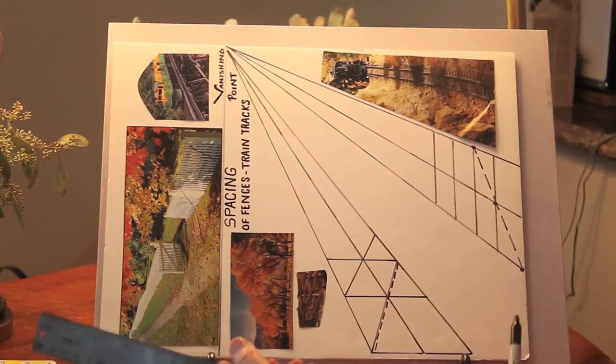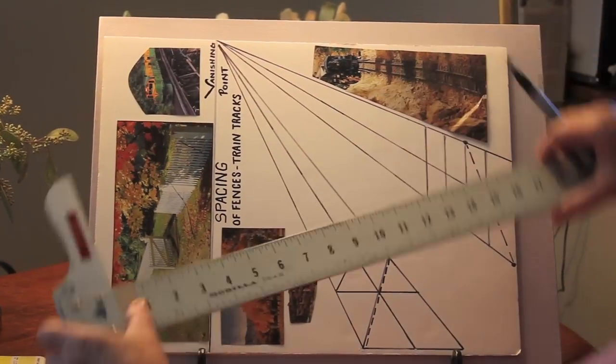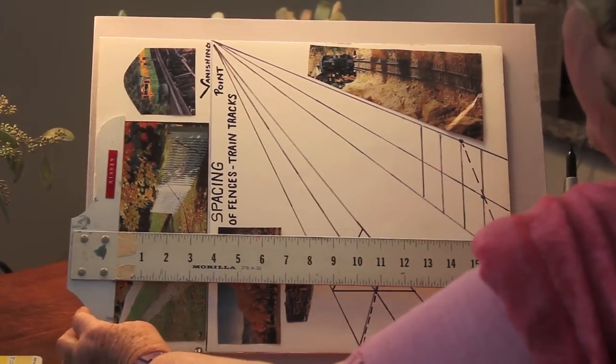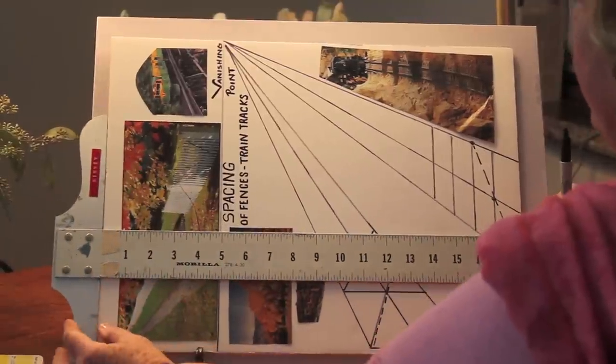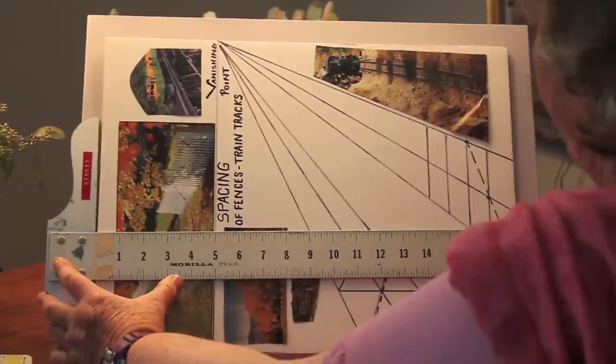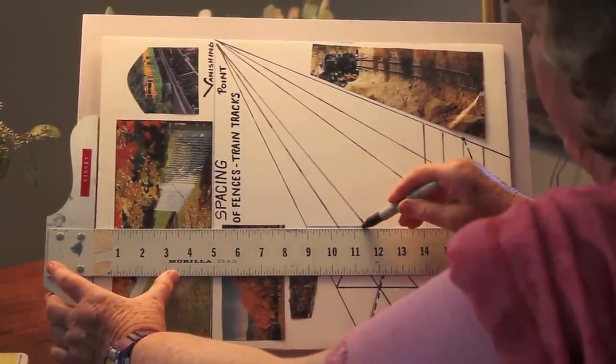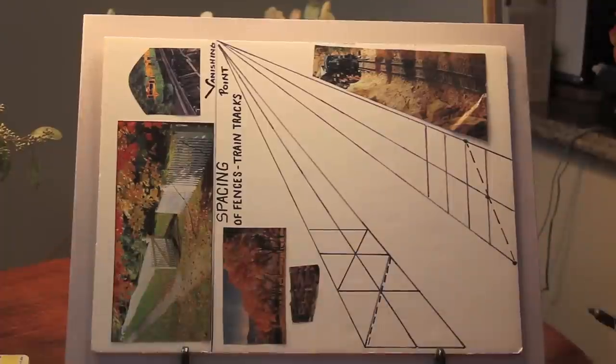I turn this like this and put my T square here so that it's parallel with this edge. So when I go like this, that gives me where the next one is.